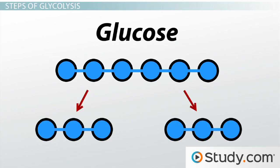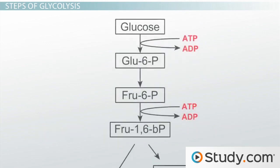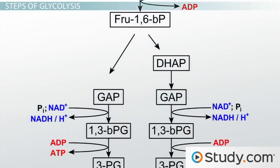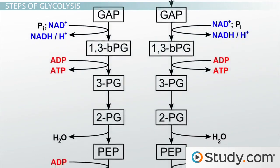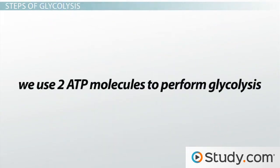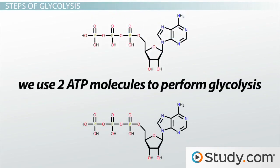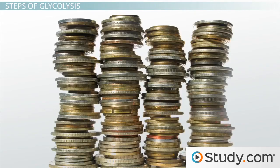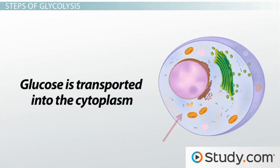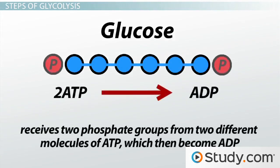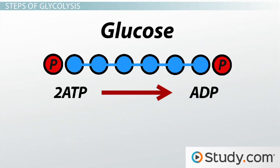In this process, we come away with some valuable products. Rather than going through the nitty-gritty of all the enzymes and chemical reactions involved, let's focus on some of the steps and how they get us to the next stage of cellular respiration. Importantly, you need to know that we use two ATP molecules to perform glycolysis. It may sound funny that we need to spend chemical energy to make chemical energy, but think of it like an investment of money that grows over time — you need to spend some chemical money to make some. Glucose is transported into the cytoplasm of our cells, where it's rearranged and receives two phosphate groups from two different molecules of ATP, which then become ADP. The addition of phosphate groups is represented by two red circles. This is the energy investment.